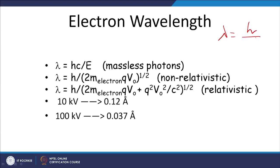The de Broglie wavelength lambda equals H divided by P, where H is Planck's constant and P is the momentum of the particle. Lambda can also be written as Hc/E for the massless photon. For an electron in the non-relativistic case, lambda = H / sqrt(2mQV₀), where m is the electron mass, Q is the electron charge, and V₀ is the applied potential difference. For the relativistic case, the correction gives lambda = H / sqrt(2m_e Q₀V₀ + Q²V₀²/c²).